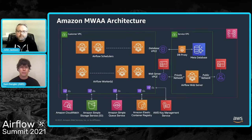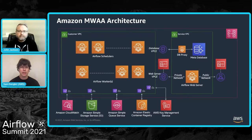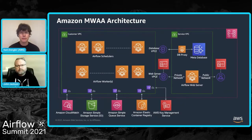Each of the orange boxes are compute containers running on ECS Fargate — a serverless container execution environment where you describe the execution container but we manage the underlying compute for you. The managed Airflow components are separated into two categories: those that run inside the service team's VPC on the right, and those that run inside your VPC as a customer. A VPC is a virtual private cloud — your private definition of a network inside AWS, where you control the CIDR blocks and subnets.